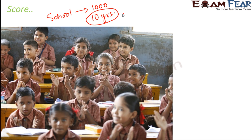Maybe in 2015 the children performed really well, but maybe in 2014, 2013, 2012, 2011, and so on they were performing really badly. So instead of relying on one year, they want to analyze the score for 10 years. Just imagine how much data that will be — the scores of all the students who have passed out from the school in the last 10 years.